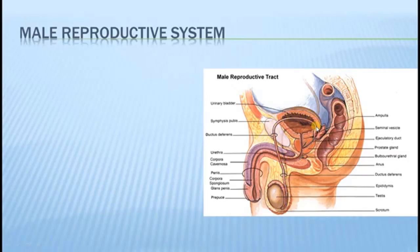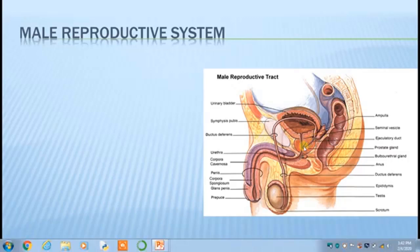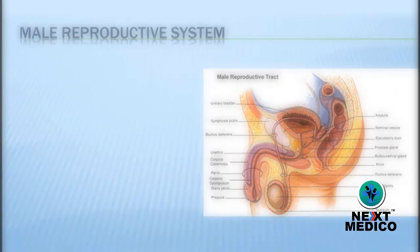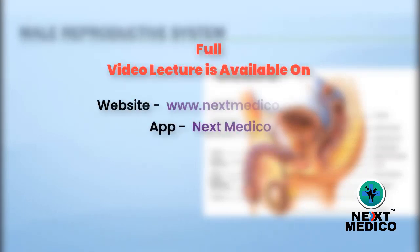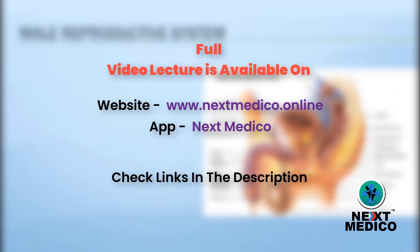Then the sperm, which is actually produced in the testis, is transported into the epididymis and then continuing as the vas deferens. The vas deferens along with the seminal vesicle will form a single duct called the ejaculatory duct, which opens into the male urethra. This is the male urethra, which is very long. It is made up of the prostatic part inside the prostate gland, then the membranous part of the urethra, and this is the spongy or penile part of the urethra.